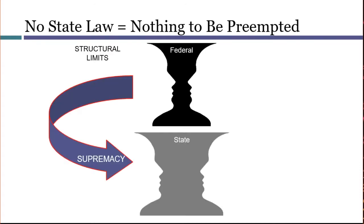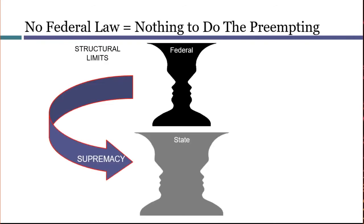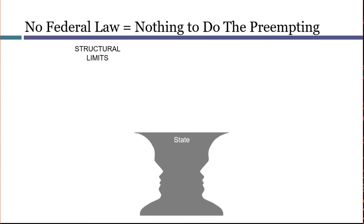If your facts don't involve any state law, then there is nothing to be preempted. And if your facts don't involve any federal law, then there is nothing to do the preempting. This might happen if Congress never passed a law, or if it passed a law that was later found unconstitutional. In these scenarios, the state law might be unconstitutional for some other reason, but not because it has been preempted.